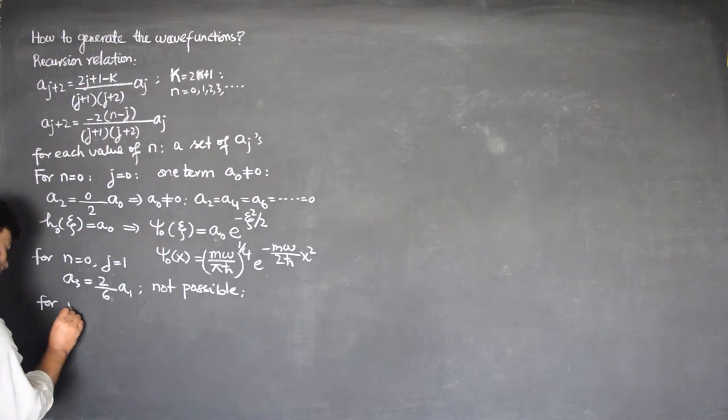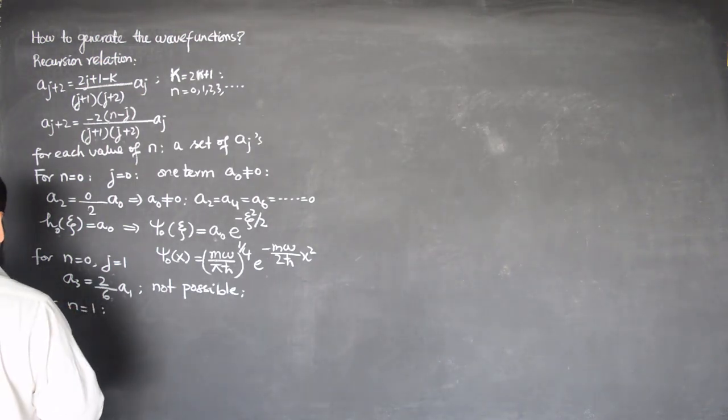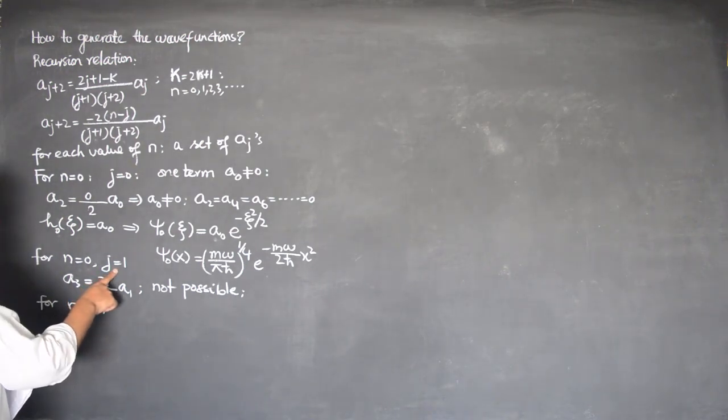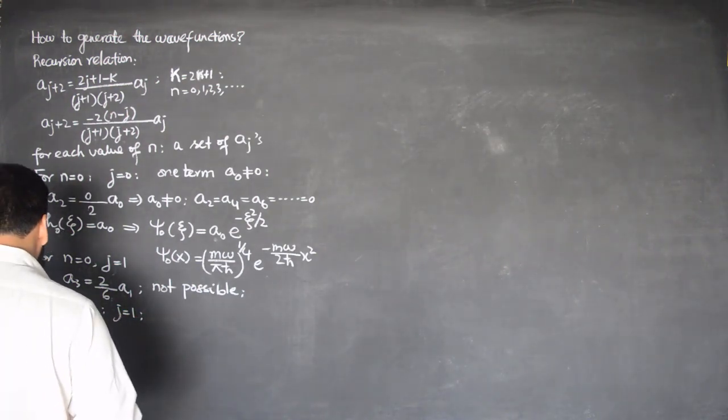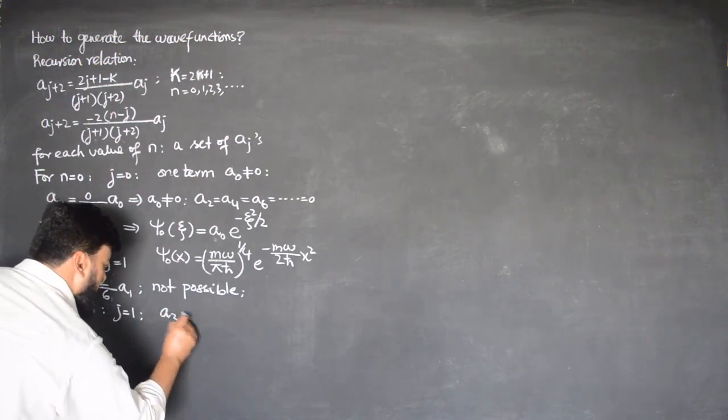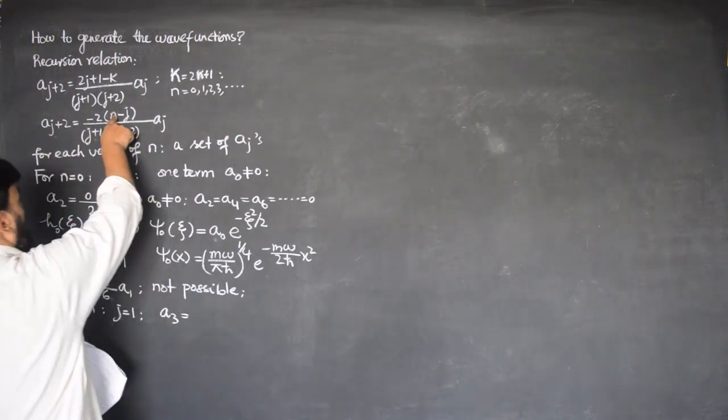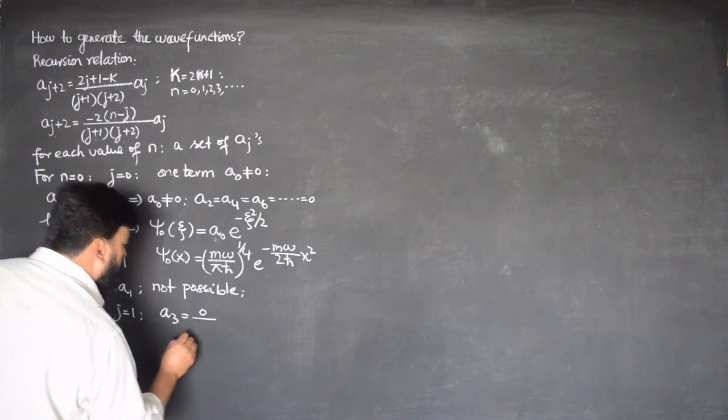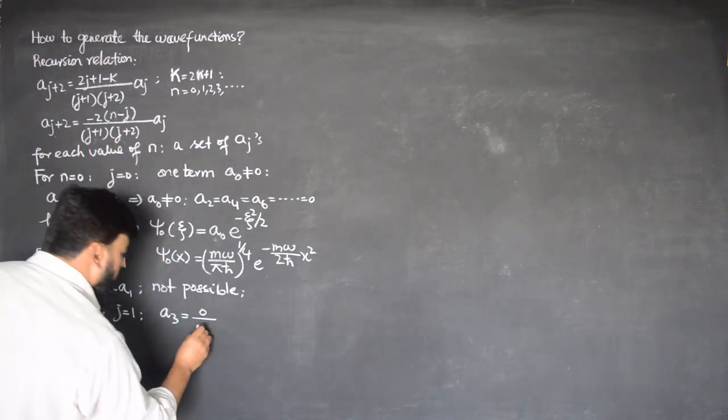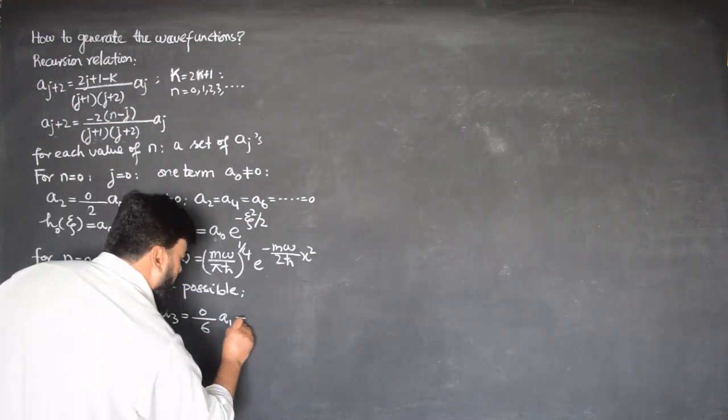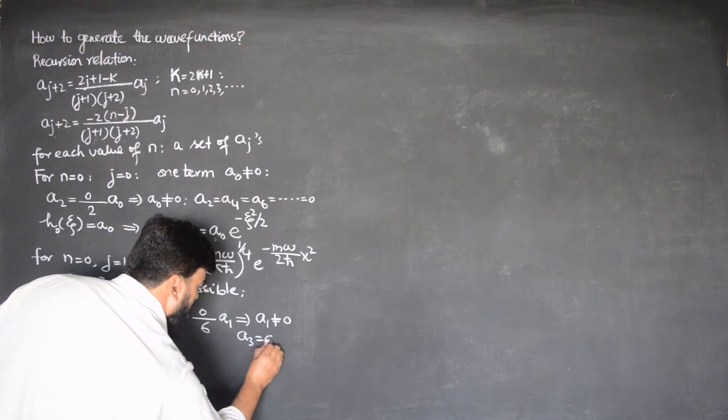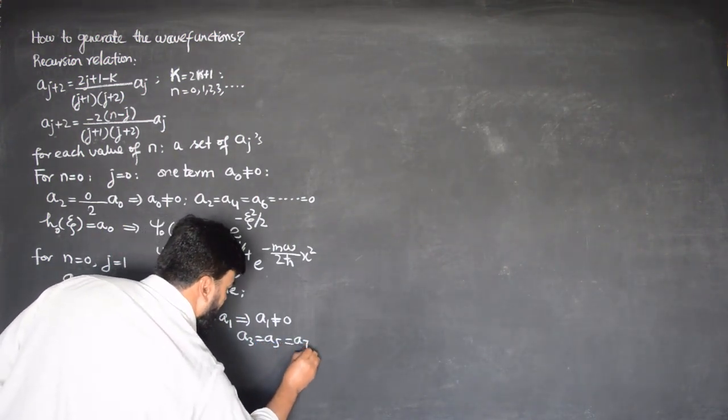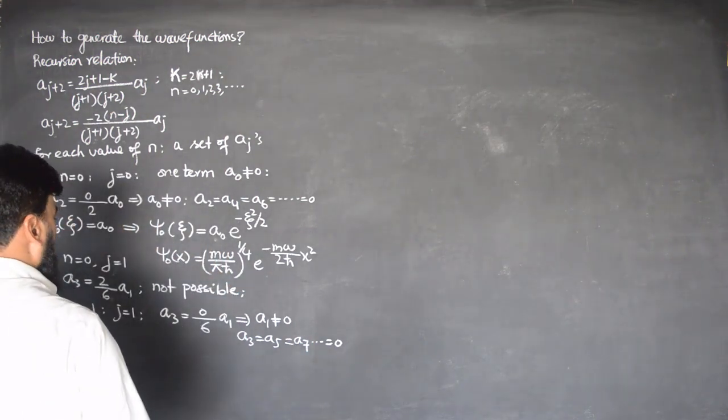For n equals 1, we can start with j equals 0, but we will again get the even series. Even we have already found. So for j equals 1, I want to find the coefficient in the odd series. A_3 when j is 1 equals 0 divided by 6 times A_1. This implies that A_1 is non-zero, while all the other odd coefficients are equal to 0. So only A_1 survives.